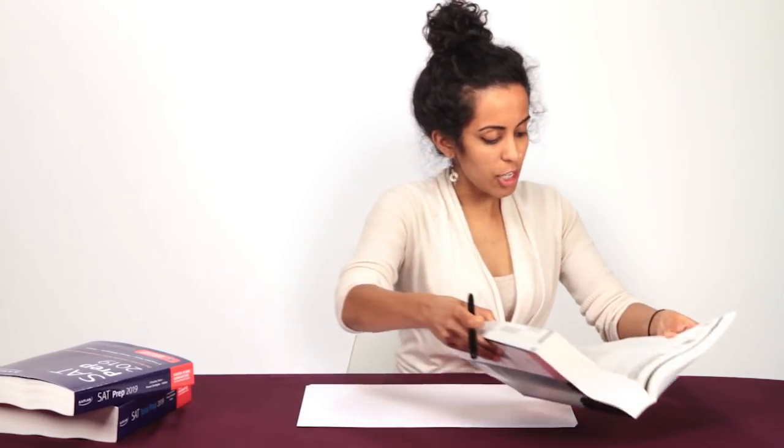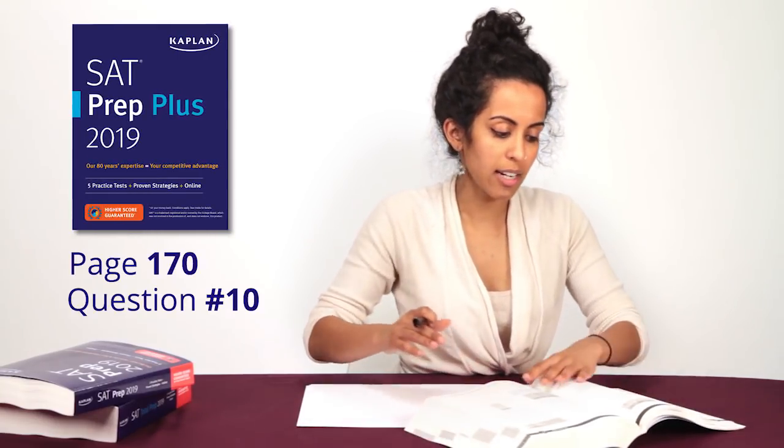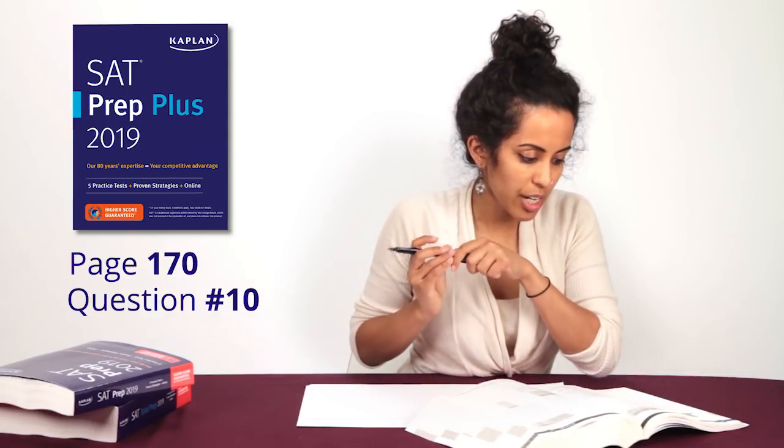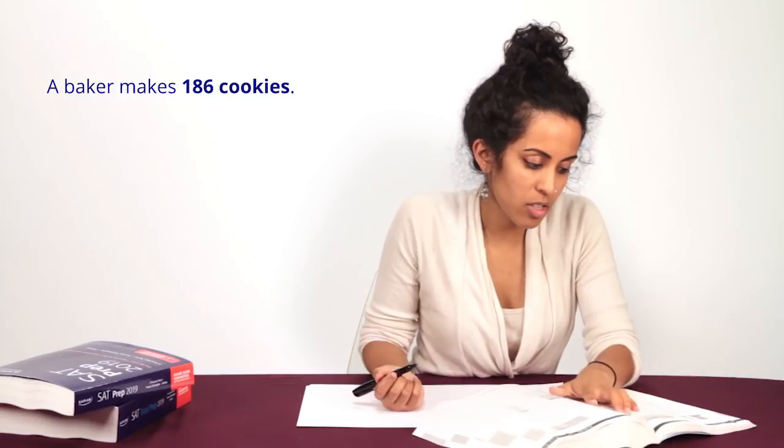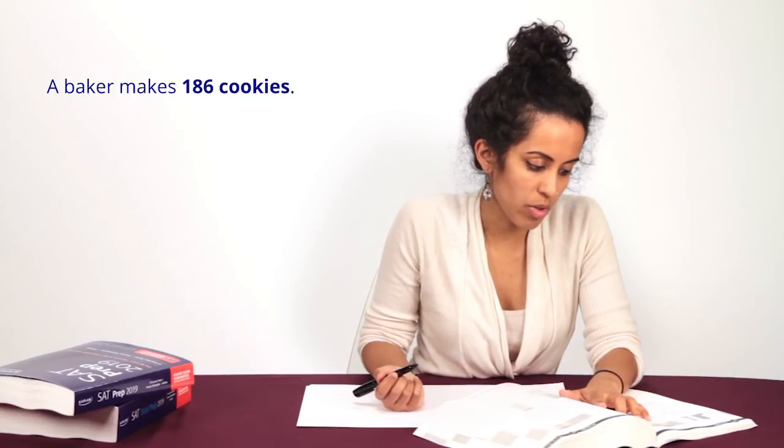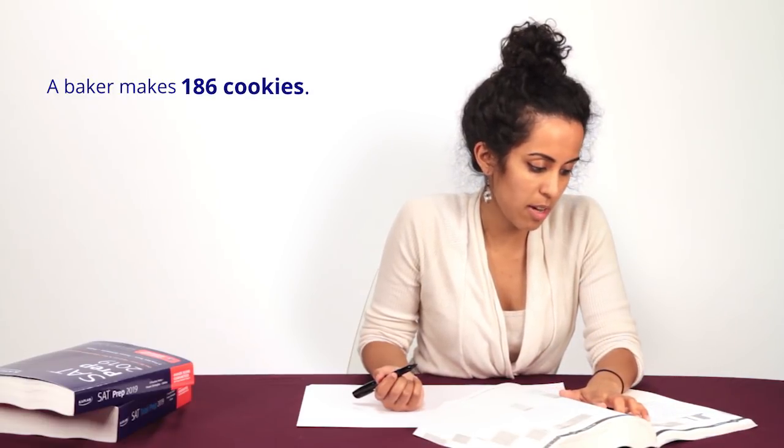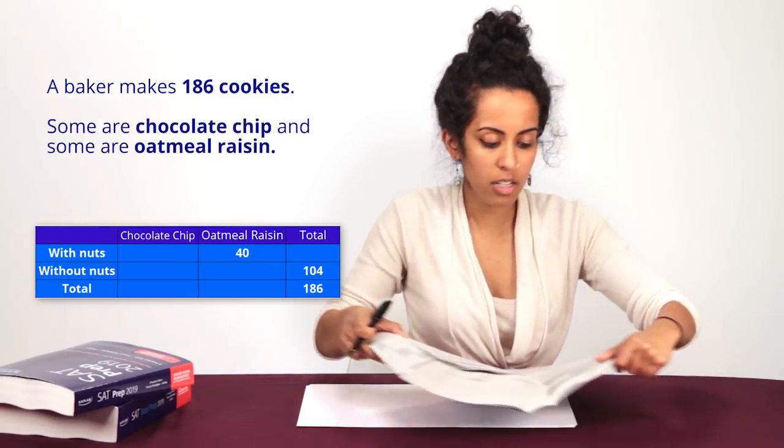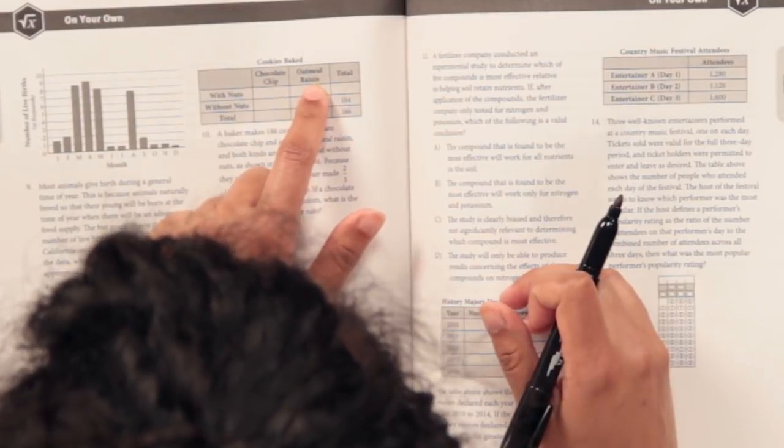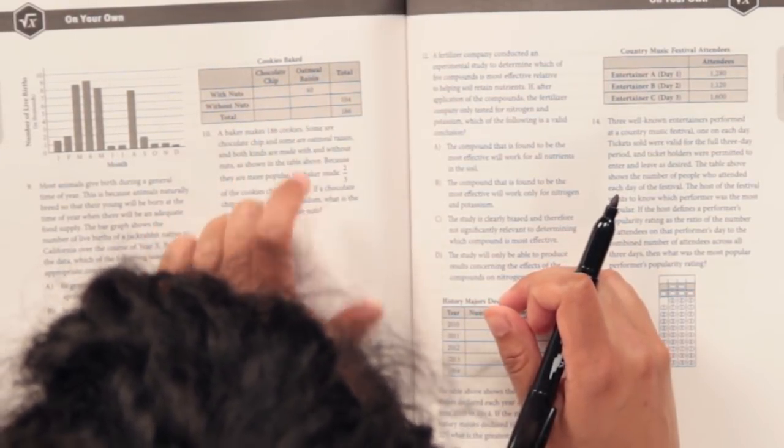Okay, let's go ahead and look at page 170, number 10. Got a chart here. So a baker makes 186 cookies. Cool, so that's the total number of cookies and that's in the bottom right of our table. Some are chocolate chip and some are oatmeal raisin. Okay, so they're splitting it up between those two. It's already in the chart.